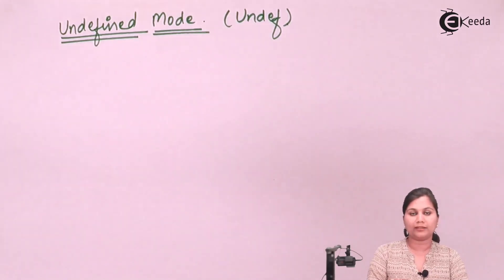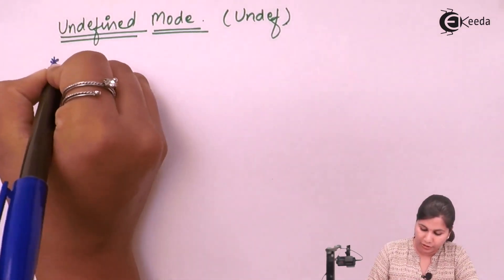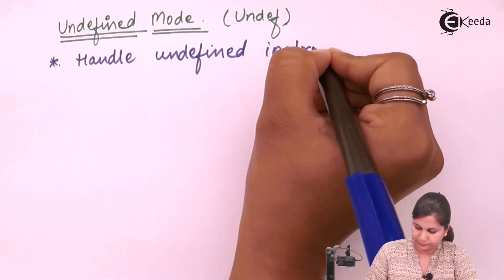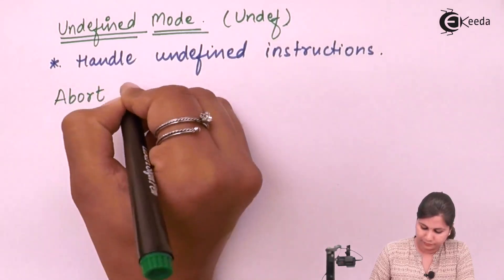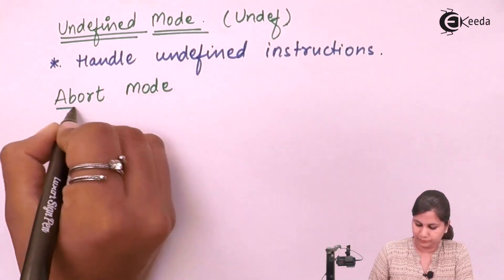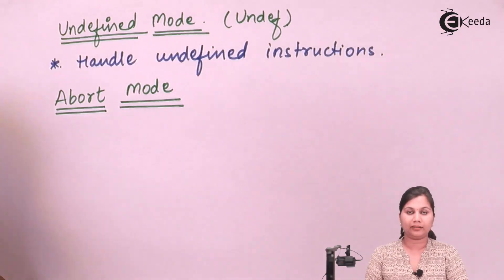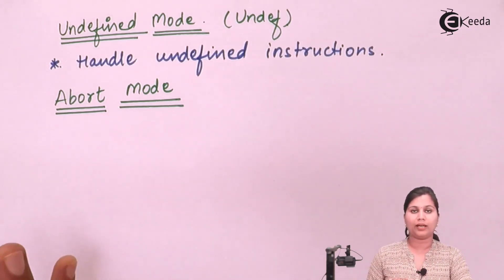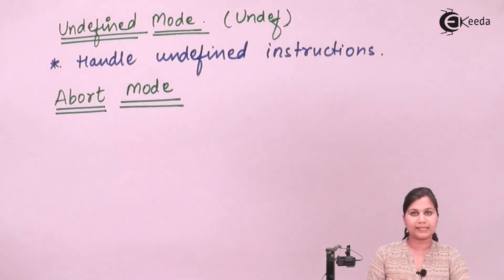The undefined mode is used to handle undefined instructions in the processor — those instructions which are not defined. The abort mode is entered whenever the processor tries to access the memory but that access fails. Because memory cannot be accessed directly in the ARM processor, if an attempt is made to access memory and it fails, the abort mode is entered.